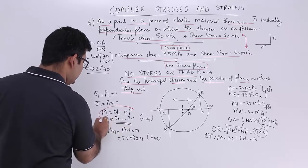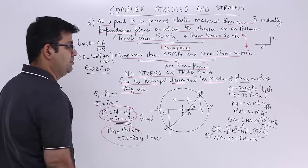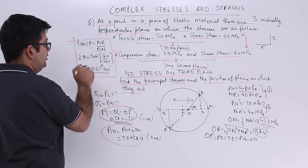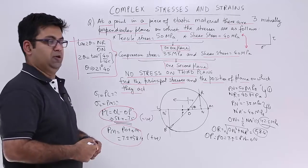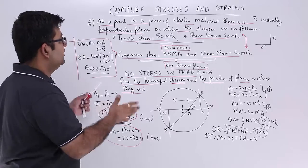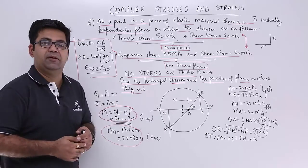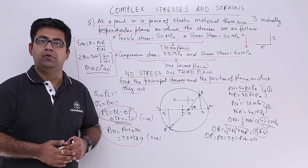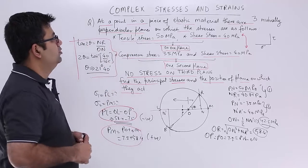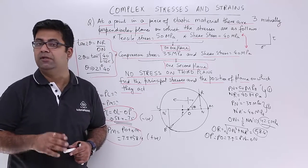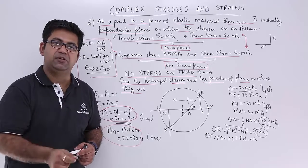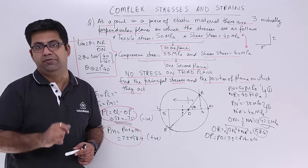So this is how you draw a Mohr circle and find out the principal stresses. So this is the first principal stress and this is the second principal stress and the orientation can be found out by using this methodology. So I hope you understood this very simple and very basic question on the concept of Mohr stress circle. This is all that we have to do in this chapter of complex stresses and strains. Now let's move on to the next chapter and talk about the bending stress diagram and the shear force diagram.